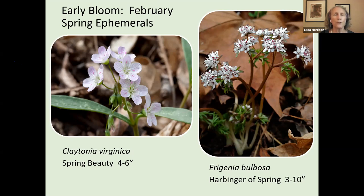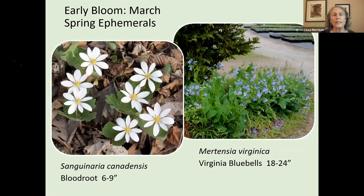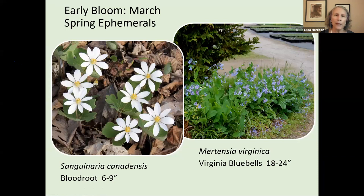Almost all spring ephemerals could be put into flower beds. The key thing to remember is that they are there and then they disappear — the leaves disappear. I love Virginia bluebells, but all those leaves will be gone, and unless something else is planted to pop up through that space, it will just be barren ground. That's what you need to consider if you want to use spring ephemerals to support pollinators.